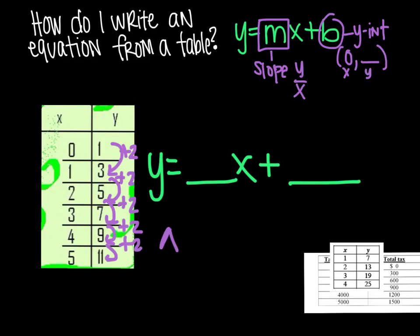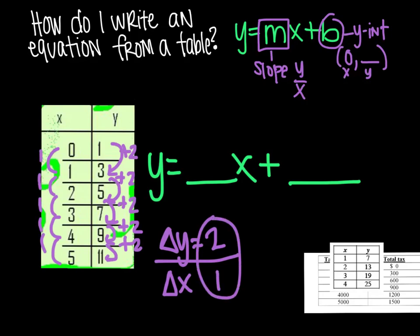So my change in y is 2 over my change in x. My change in x every time is consistently 1. So it's going to be 2 over 1. That's my slope. And you could write it 2 over 1. It's also just written as 2.